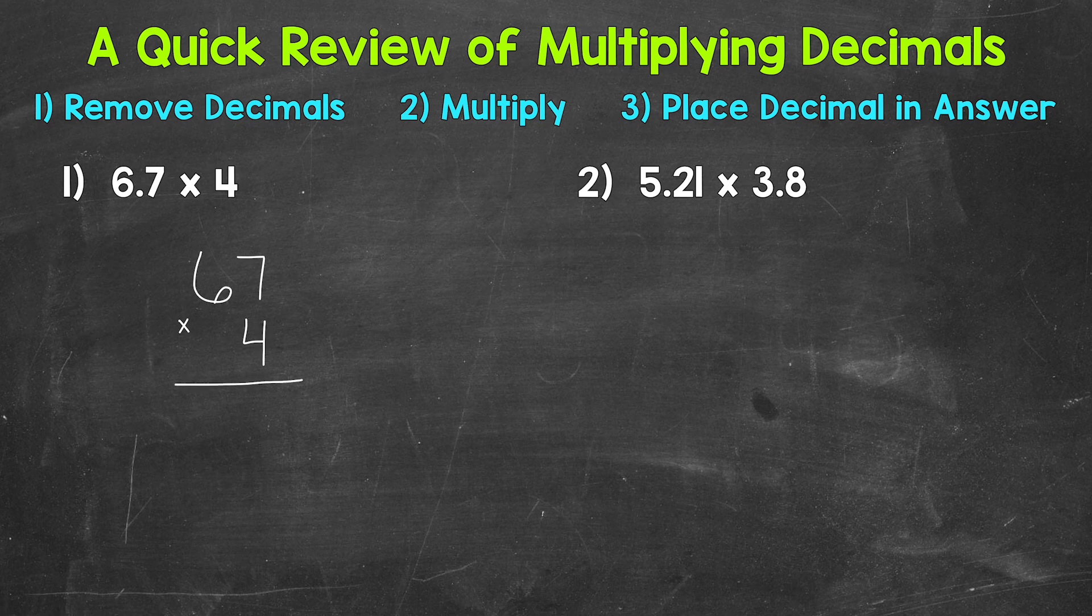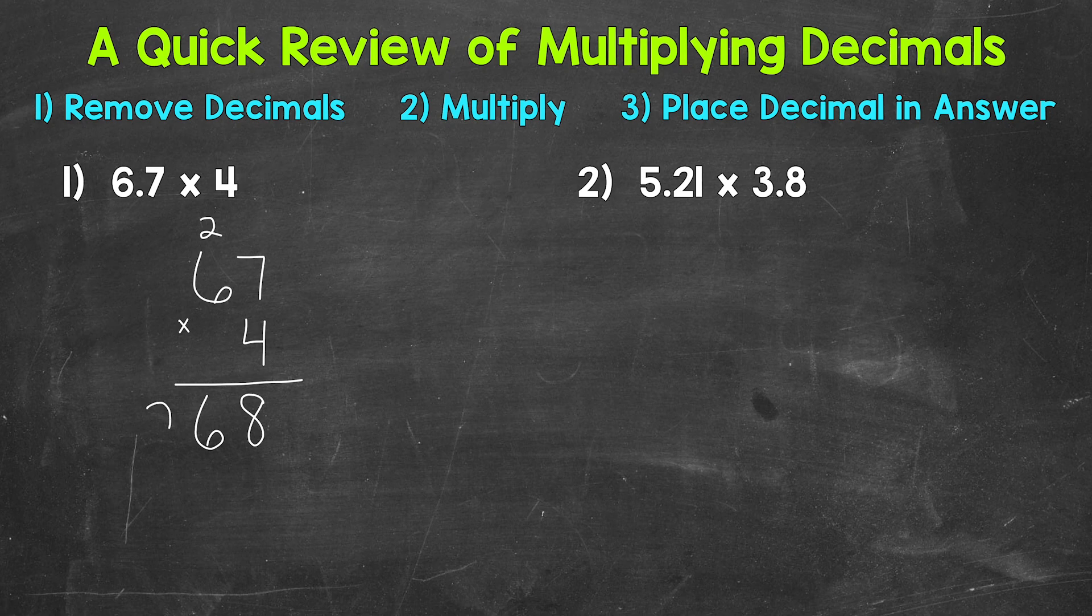We're going to worry about placing the decimal in our answer once we multiply. So once we remove the decimals, we can multiply. So we'll start with 4 times 7, which is 28. Carry that 2. And then we have 4 times 6, which is 24. 24 plus that 2 is 26.